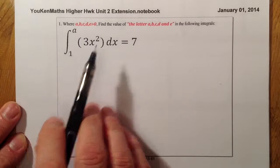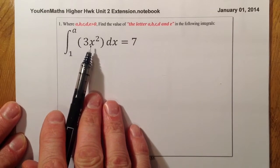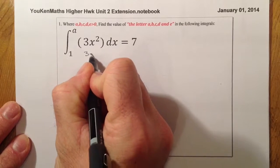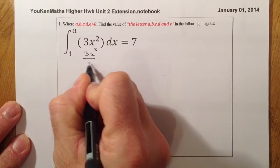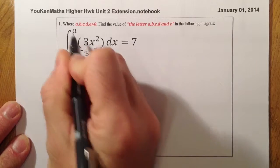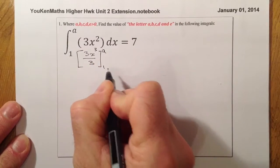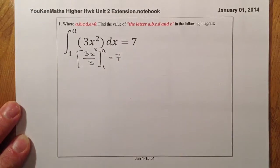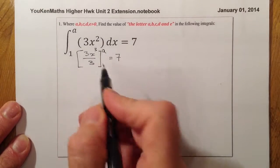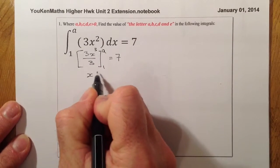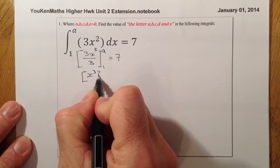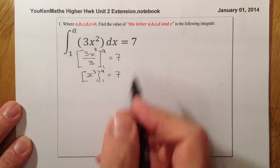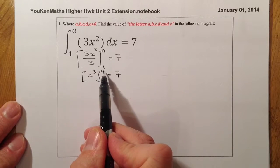So first thing I'm going to do is integrate this part here. What I'm going to get is 3x cubed all over 3. I'll put that in the square bracket with limits A and 1, and that's going to equal 7. If I simplify that out, I get x cubed between A and 1, which equals 7. Now, just like we normally do, we'll substitute the values in where we see x.